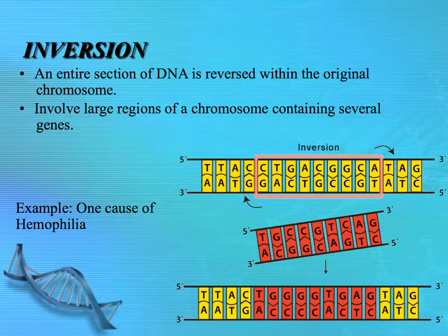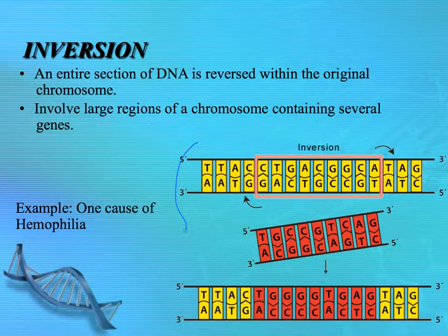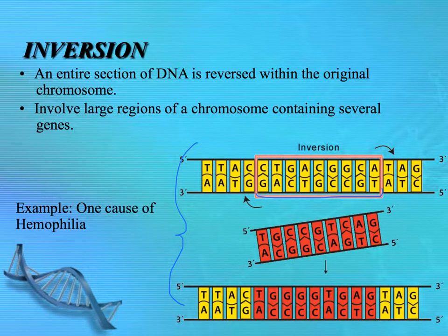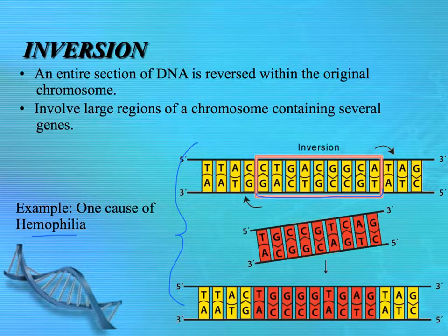The first type of chromosomal mutation is inversion, where within a particular chromosome a whole section of DNA is taken out, flipped, and reinserted, as illustrated in this diagram. This involves large sections of a chromosome containing at least one gene, often several. One of the causes of hemophilia — a rather severe case, the failure to have blood clot properly — is from a chromosomal inversion.